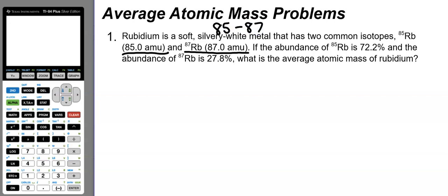Based on the abundance, the result will be skewed in one direction. Reading the problem, rubidium-85 is the more abundant isotope, so the average will be skewed somewhat toward 85 — it won't be exactly 86, it'll be a little closer to 85. We can figure out the exact average atomic mass by taking a weighted average.